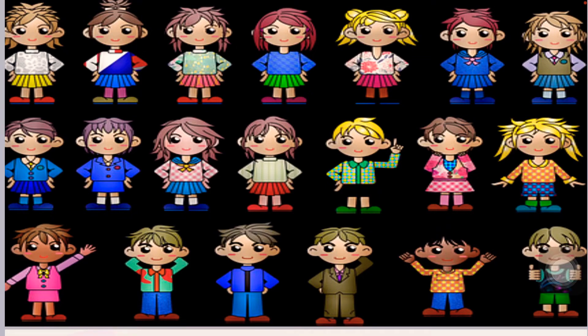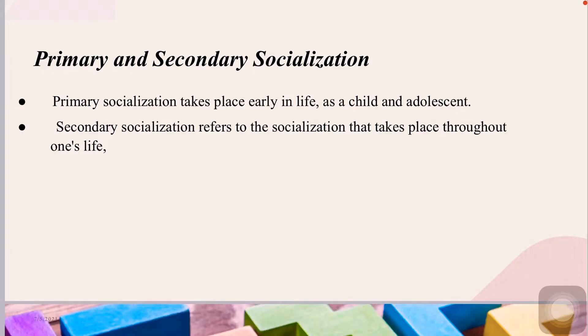Socialization is a life process but is generally divided into two parts. Primary socialization takes place early in life as a child and adolescent. Secondary socialization refers to the socialization that takes place throughout one's life, both as a child and as one encounters new groups that require additional socialization.